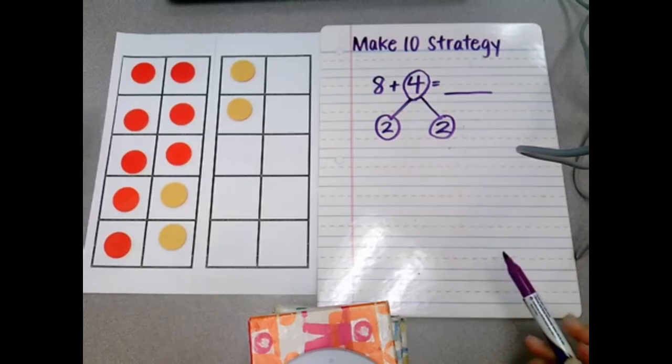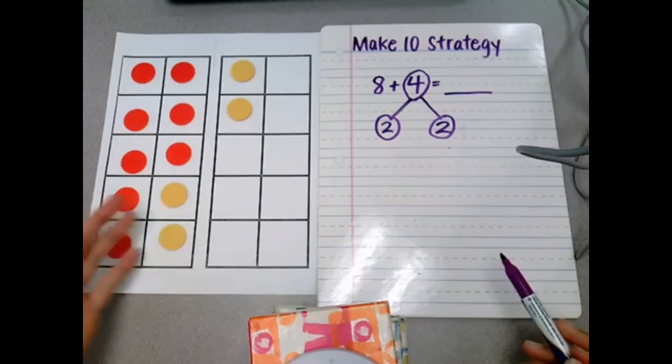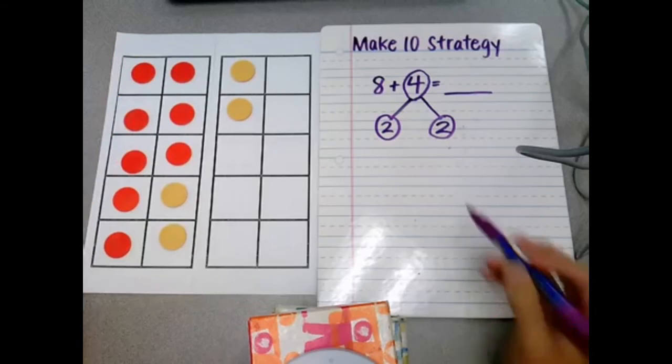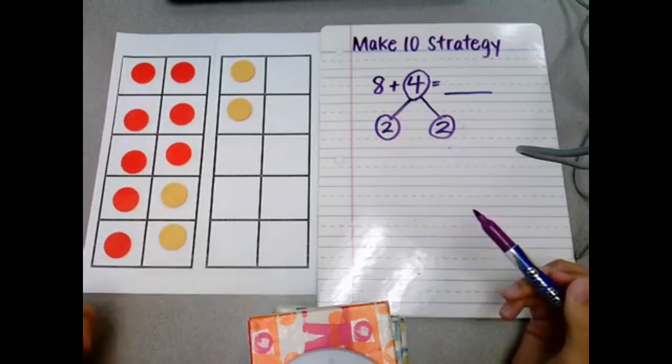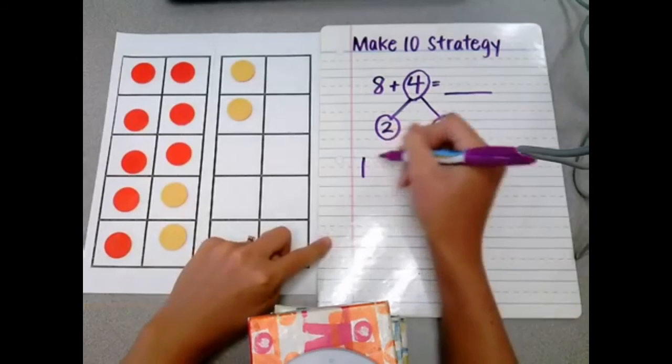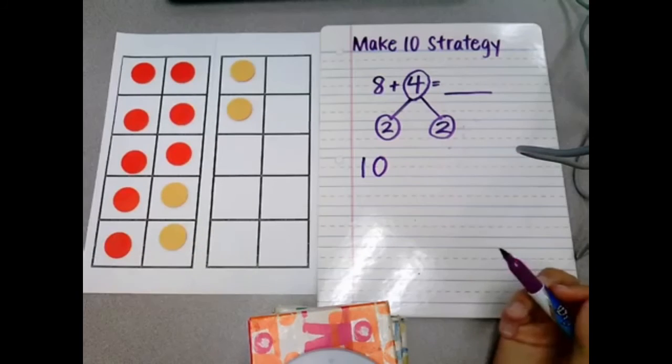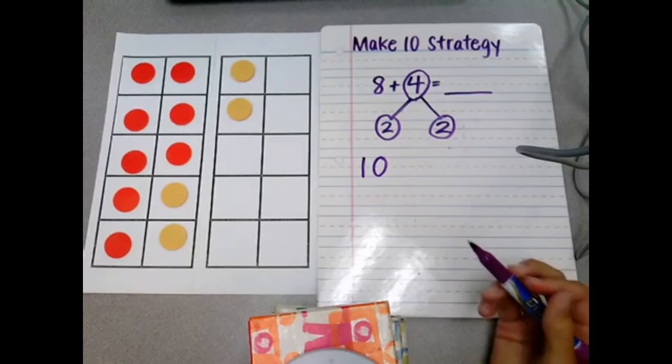Now I look at the kids and I say, okay, we used our 2 to make this into a complete 10 frame. Because 8, right here, plus the 2, equals 10. There, we made 10. That's the purpose of the strategy, to make 10.